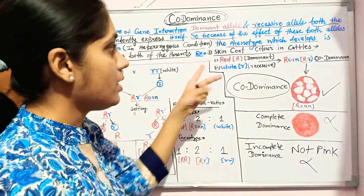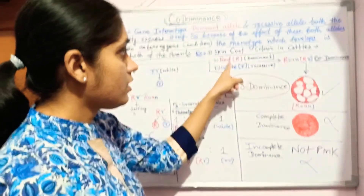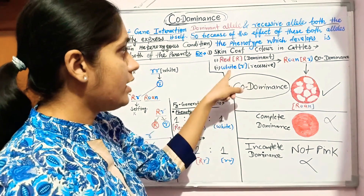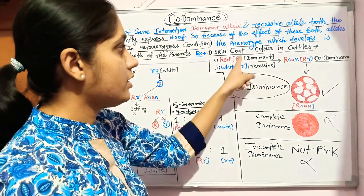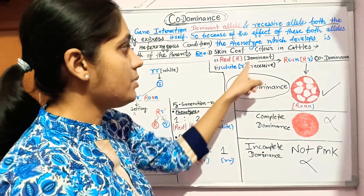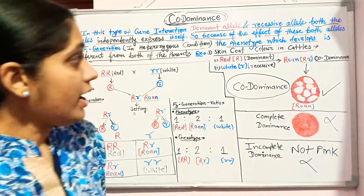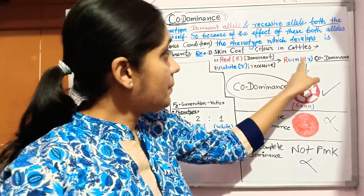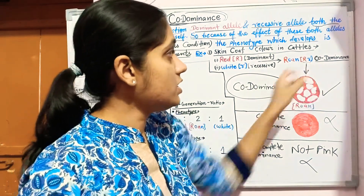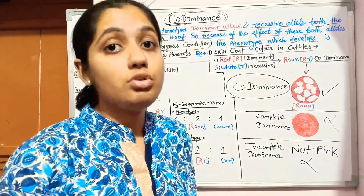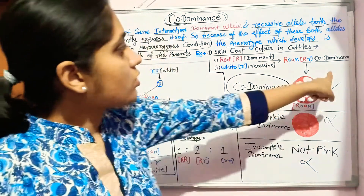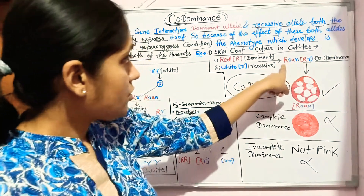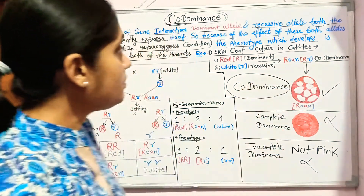The skin coat color in cattle has two contrasting alleles: the red color allele, which is capital R, and the white color allele, which is small r. Capital R is dominant and small r is recessive. When both alleles are present together in a heterozygous condition, it shows co-dominance and produces the roan coat color.